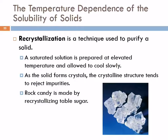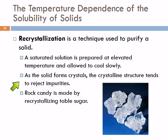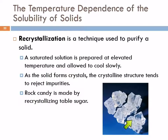One technique for purifying a solid is called recrystallization. You make a saturated solution at an elevated temperature and allow it to cool slowly. The goal here is not to create a supersaturated solution. As you let it cool slowly, the solid will slowly form crystals, and the crystalline structure tends to reject impurities when those crystals form slowly. They're going to exclude any impurities present. Rock candy is made by recrystallizing table sugar — when you allow it to crystallize slowly, you get much larger crystals.